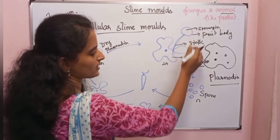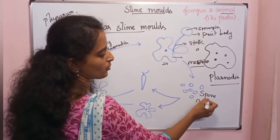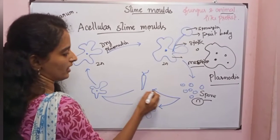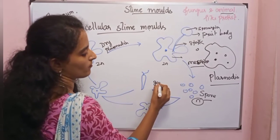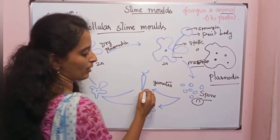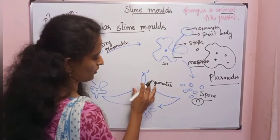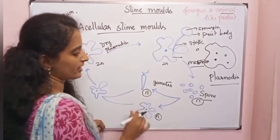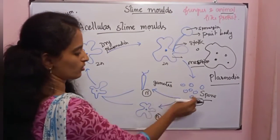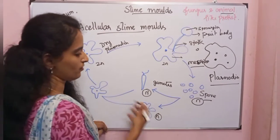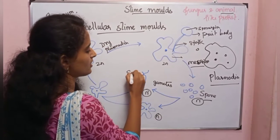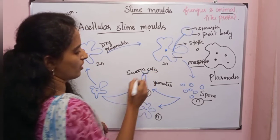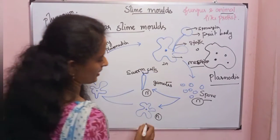From one cell of sporangia, four haploid spores are formed through meiosis. These haploid spores then form two types of gametes. The spores germinate into flagellated swarm cells or myxamoeba — these are the two forms of gametes produced.